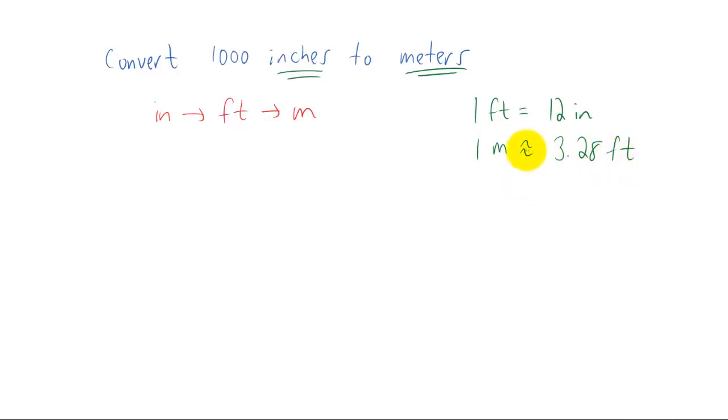Just something to keep in mind, this little squiggly equal sign is an approximate sign. That just means that 1 meter is not exactly 3.28 feet. So on this problem, we're approximating just a bit. But let's do it. Let's start with 1,000 inches.